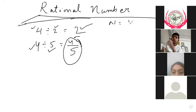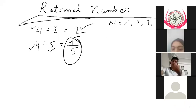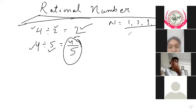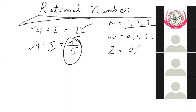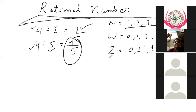You know that natural numbers start from 1, 2, 3 up to infinity. When we include zero with natural numbers, we call it whole numbers — starting from 0, 1, 2, 3 to infinity. Integers include negative numbers too: zero, plus or minus one, plus or minus two, plus or minus three, and so on.